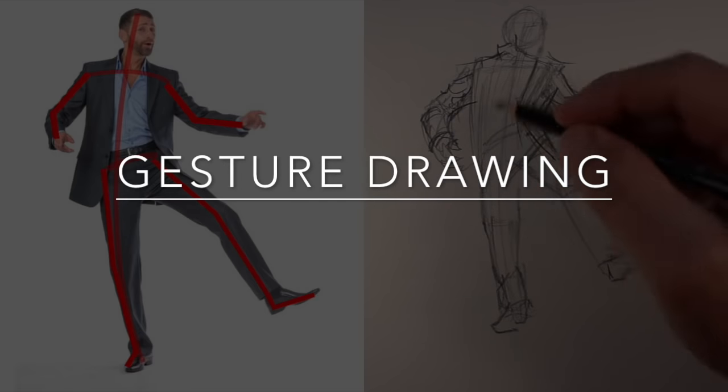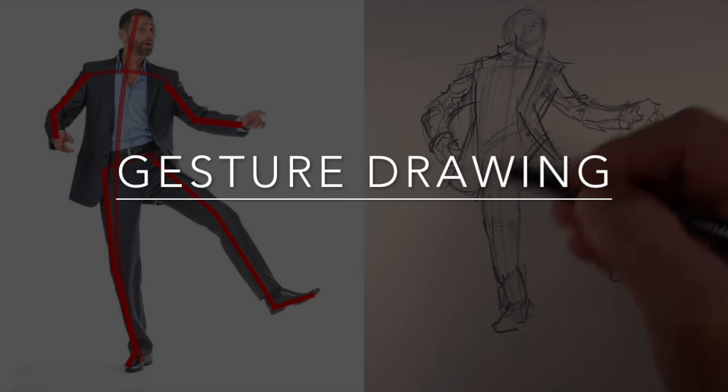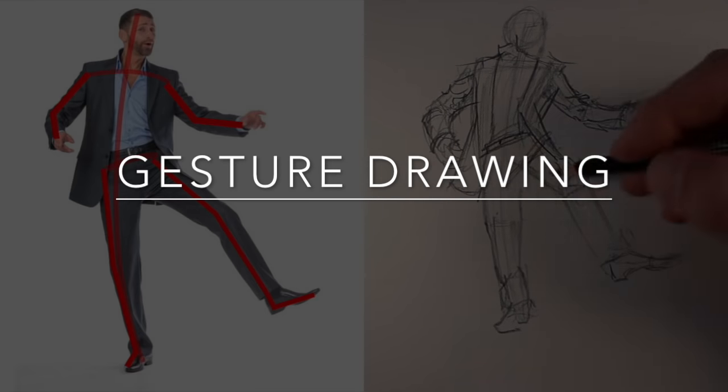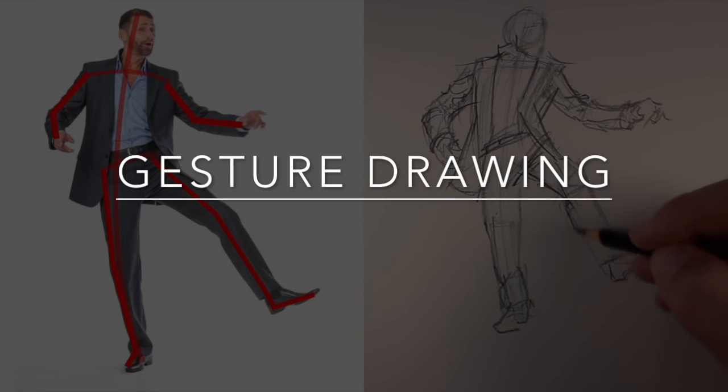In this video, we'll take a look at a method of drawing the human figure loosely and quickly with gesture drawing. We all know that a line can be used to define the boundaries of an object. Lines like these are called contour lines.